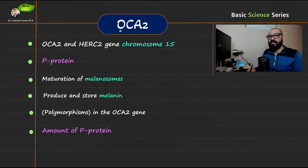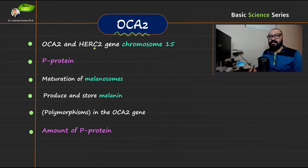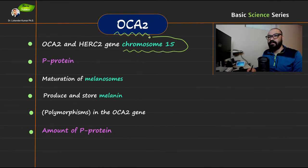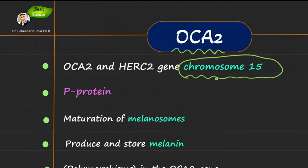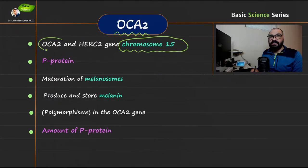In this slide, I'm going to explain the OCA2 gene. This particular gene is present on chromosome 15. It is important to remember that this gene is present on chromosome 15 and is responsible for the expression of p-protein.